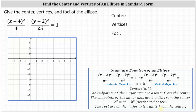Analyzing our equation, notice the larger denominator is under the y part, and therefore we have a vertical major axis. An easy way to remember this is that the y axis is a vertical axis, and since the larger denominator is under the y part of the equation, the ellipse has a vertical major axis. This also indicates that a squared equals 25, so a equals five, and b squared equals four, indicating b equals two.